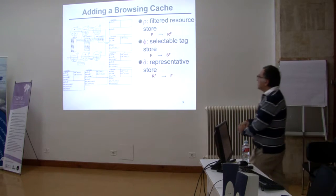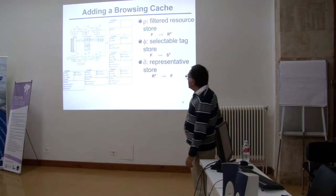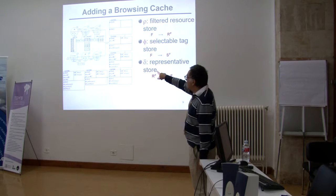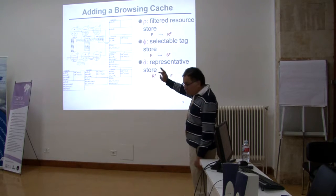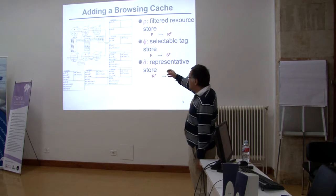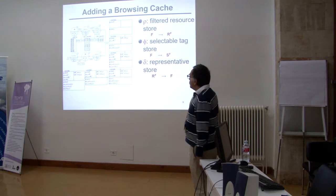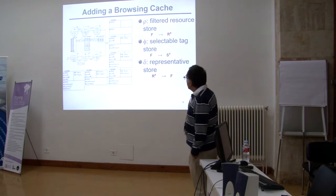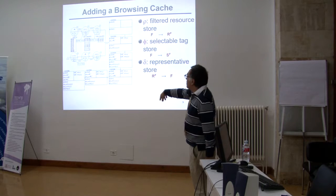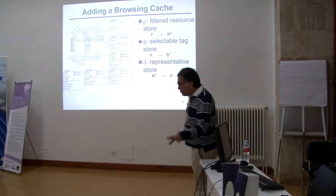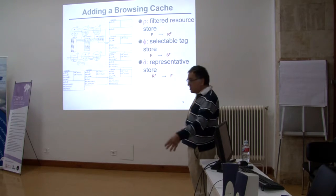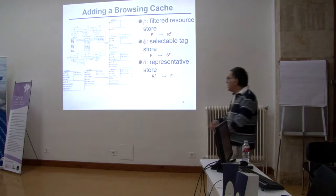Here you can see an example using a cache. The key point is that when you arrive at state 3, instead of recomputing this information, you can retrieve it from the cache by using the set of selected tags as a key. And also, if you arrive at state 5, you need to compute the set of filtered resources, but the set of selectable tags can be recovered from the cache.